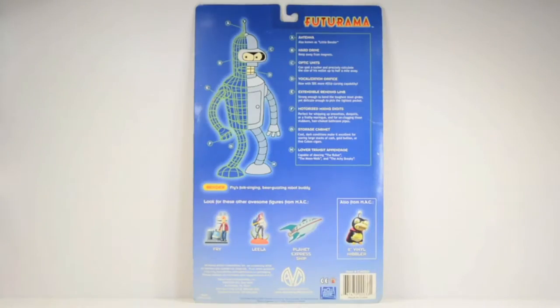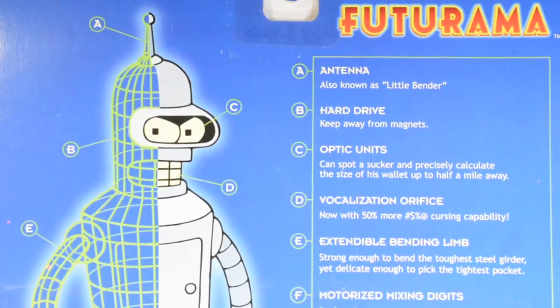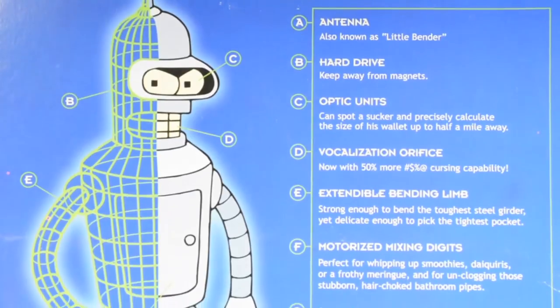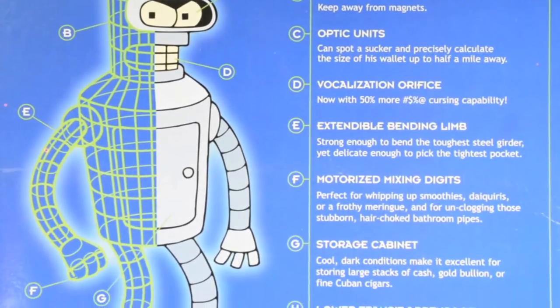And we have a lot going on on the back. You can see they labeled all his appendages and functions with a brief description. You can see the antenna, hard drive, optic units. They can spot a sucker and precisely calculate the size of his wallet up to a half mile away. Impressive.